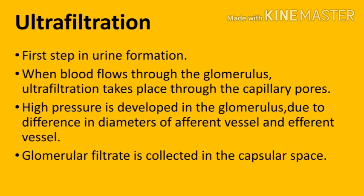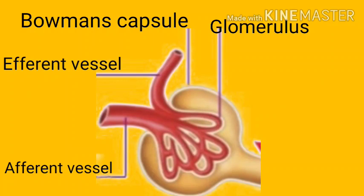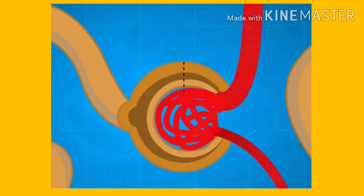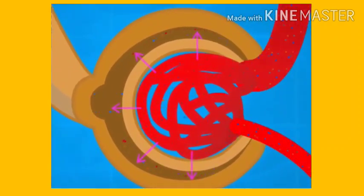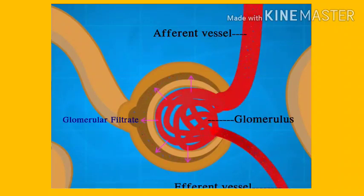The glomerular filtrate formed as a result of ultrafiltration is collected in the capsular space. The blood is filtered so finely that all the constituents of plasma except the proteins are filtered. The substance obtained during filtration is known as glomerular filtrate, and it is collected in the capsular space.